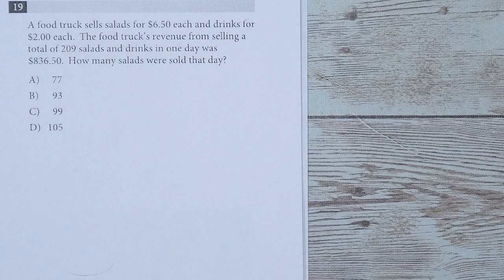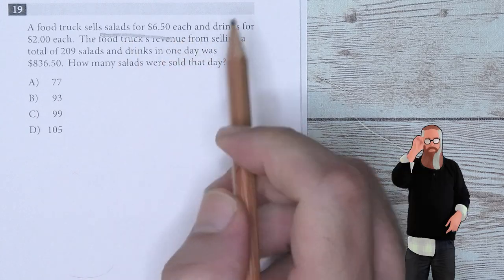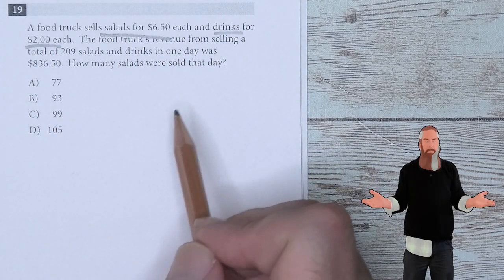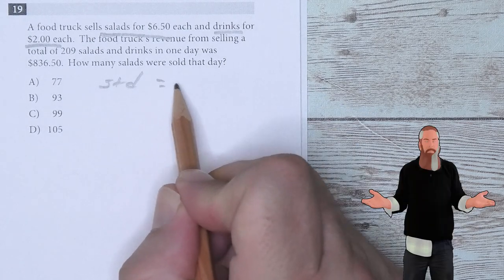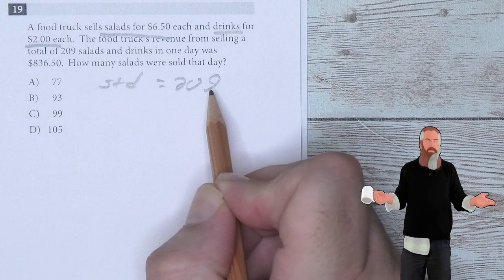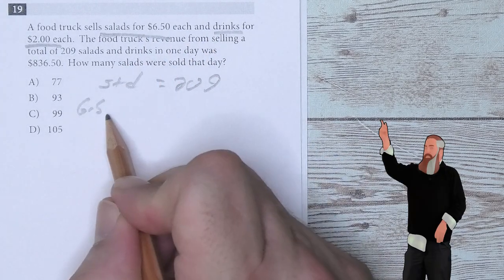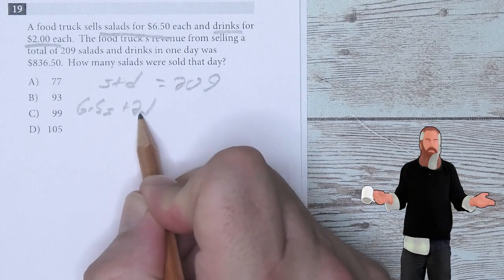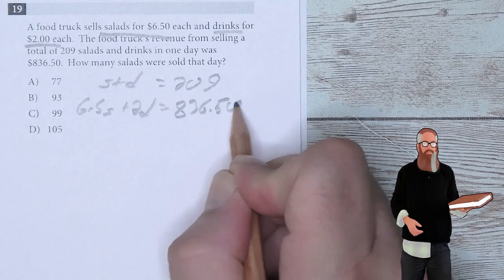A food truck sells salads for $6.50 each and drinks for $2 each. The food truck's revenue from selling a total of 209 salads and drinks in one day was $836.50. How many salads were sold that day? We know that salads are $6.50, drinks are $2. S plus D, the salads and drinks, totaled at 209.